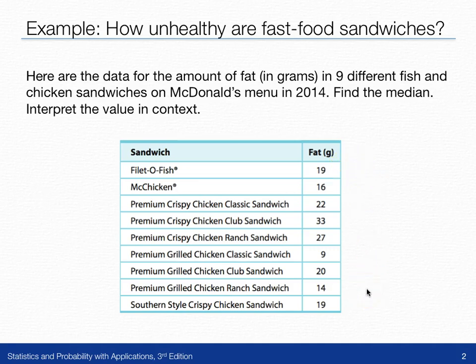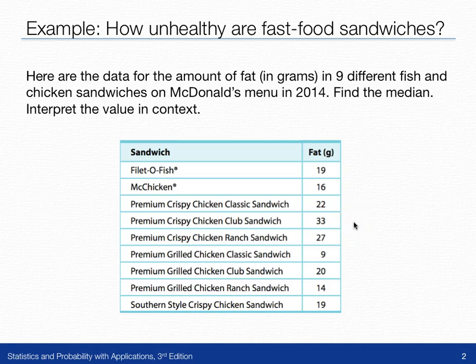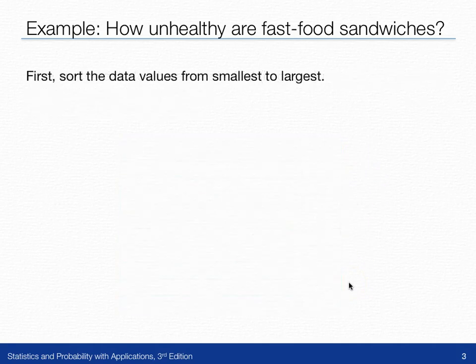We want to find and interpret the value of the median in context. We can see that some have less fat, like the grilled chicken sandwich, and some, like the chicken club sandwich, have more fat. What we're going to do first is set these values from least to greatest — we're going to sort them.